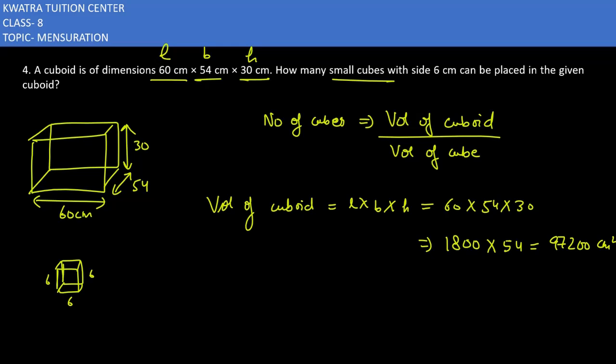Volume of cube. Next, what will be your volume of cube? Side square. So how much is your side? It is 6. So 6 square is nothing but... Sorry, side not square, cube. 6 cube is 216. So yes, answer for volume of cube is 216.